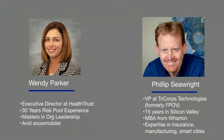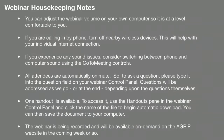Before I turn it over to Wendy and Phillip, a few housekeeping notes. You can adjust the webinar volume on your own computer. If you're calling in by phone, turn off nearby wireless devices to help with your internet connection. If you have sound troubles, consider switching between phone and computer sound using the GoToMeeting controls. All attendees are automatically on mute, so if you want to ask a question, type it into the question field on your webinar control panel. There is a handout available in the handouts pane. We are recording this webinar and will post it to the AGRIP website in the coming week or so.